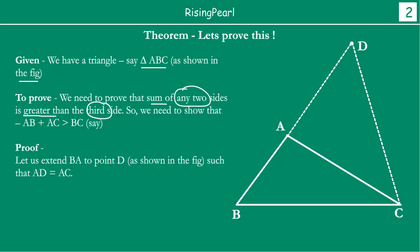We will do a small construction first. We take BA and extend it to a point D such that AD is equal to AC. So AD is equal to AC by construction. After that, we join D and C.